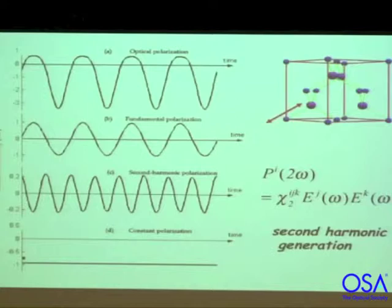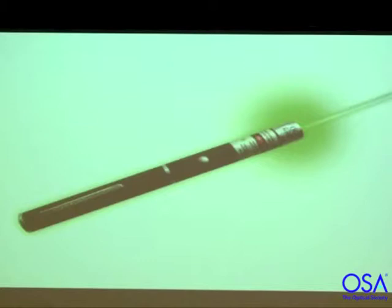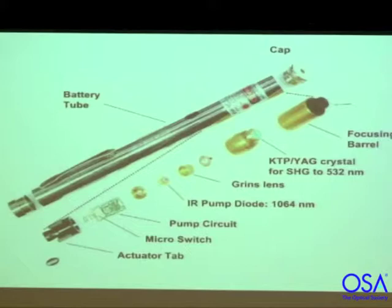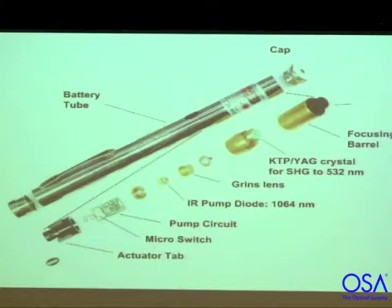If I had a green laser pointer — which I'm sure you've seen before — that's what the guts look like, and it works by second harmonic generation. There's a red laser that pumps a crystal, leading to second harmonic generation at 532 nm. It's just easier to make a laser that works in the red rather than in the green, so you take one that works in the red and double the frequency to get green light coming out.